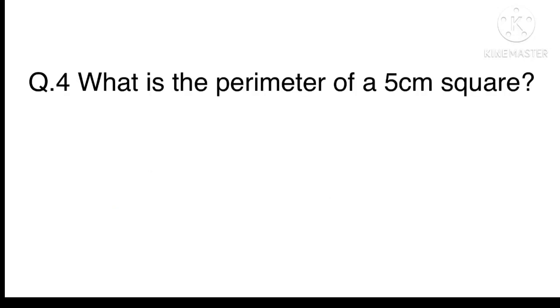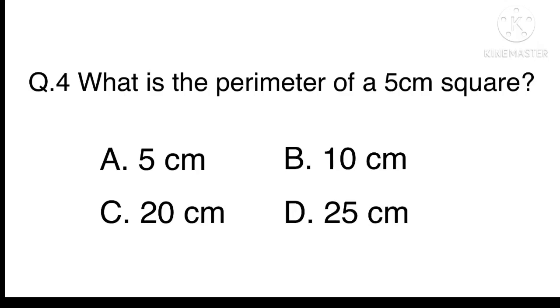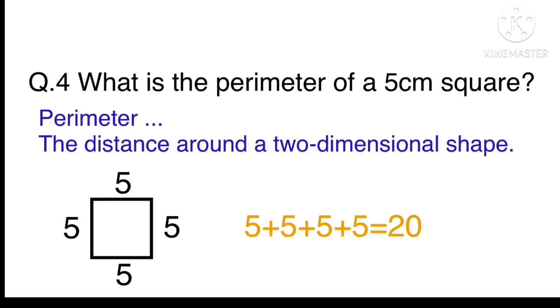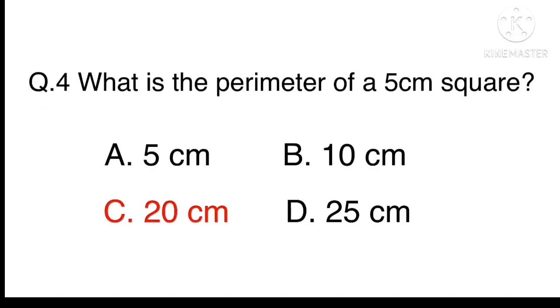Question 4. What is the perimeter of a 5 centimetre square? A. 5 centimetres B. 10 centimetres C. 20 centimetres Or D. 25 centimetres. Perimeter means the distance around a two-dimensional shape. If one side of a square is 5 centimetres, then the other three sides also have to be 5 centimetres. So, 5 plus 5 plus 5 plus 5 equals 20. The answer is C. 20 centimetres